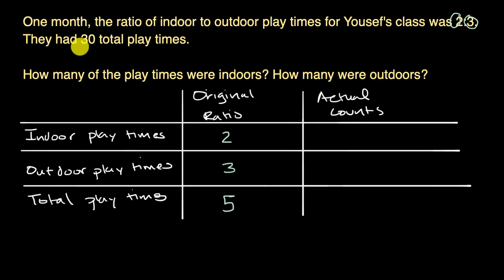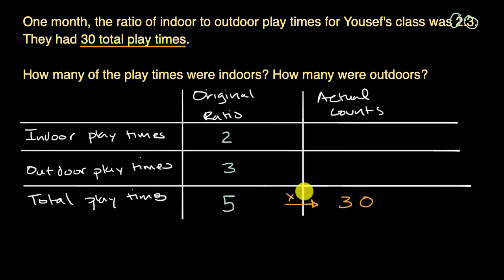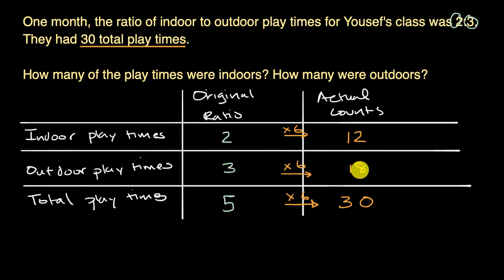They tell us that there were 30 total actual playtimes, so the actual number is 30. Now we can think about how to go from the original ratios to the actual counts. If we take the total, we notice that we are multiplying by six. To maintain the ratios, we multiply everything by six: that gives 12 actual indoor playtimes and 18 actual outdoor playtimes. The ratio still holds up — two is to three as 12 is to 18, and two is to five as 12 is to 30.